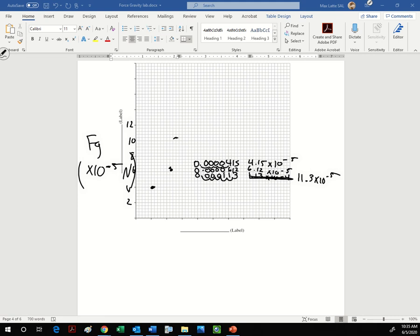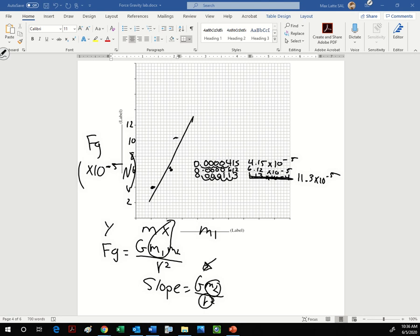So in the end what we're doing is we're gonna use this. So when we graph F_g and mass 1, this is our y value, this is our x value. So our slope is equal to everything else, right? So then slope of your graph, this is your controlled variable, this is your controlled variable, you can find a value for g. So you should get 6.67 times 10 to the negative 11 Newton meters squared per kilogram squared is what you want to end up getting.